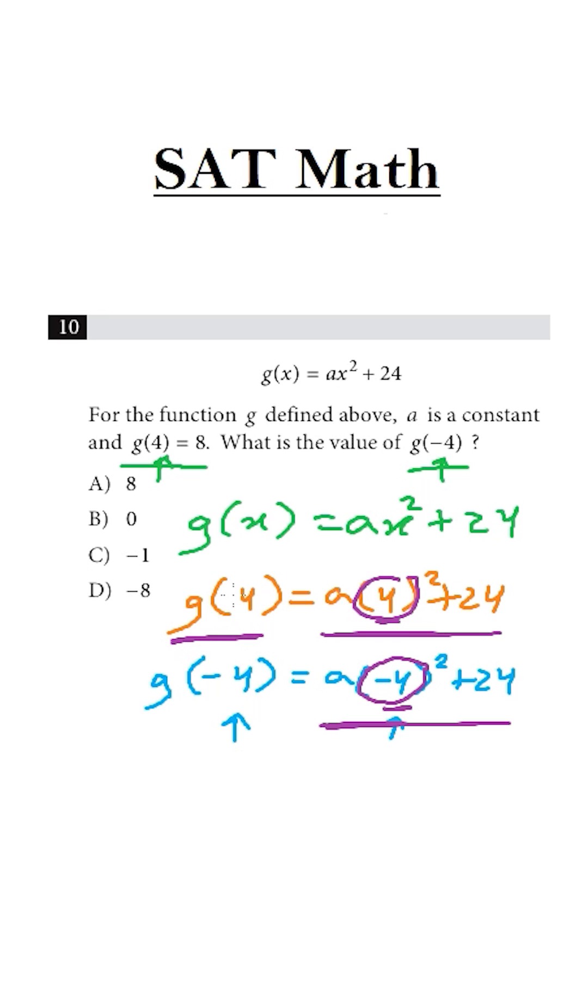So if g of 4 is 8, the question says here, g of minus 4 must be 8 because the result is same. Minus 4 squared and 4 squared is same. So our answer is choice A, 8.